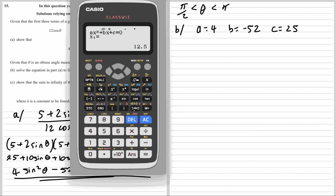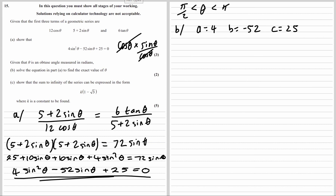The solutions are 12.5 and a half. Sine theta can't be 12.5 because sine theta must be between negative 1 and 1, so we want the half answer.